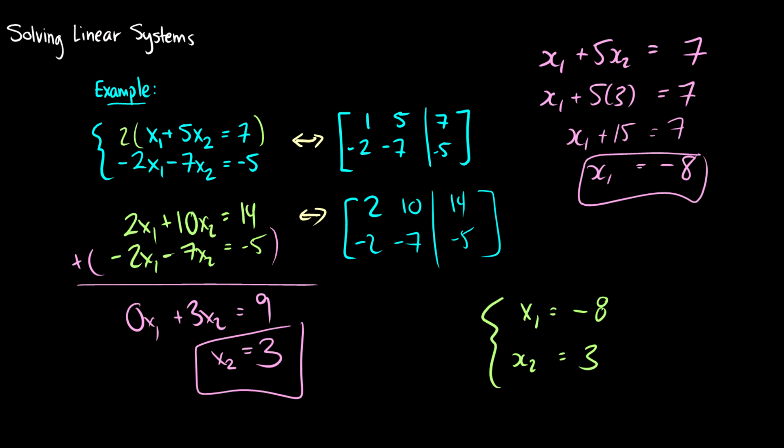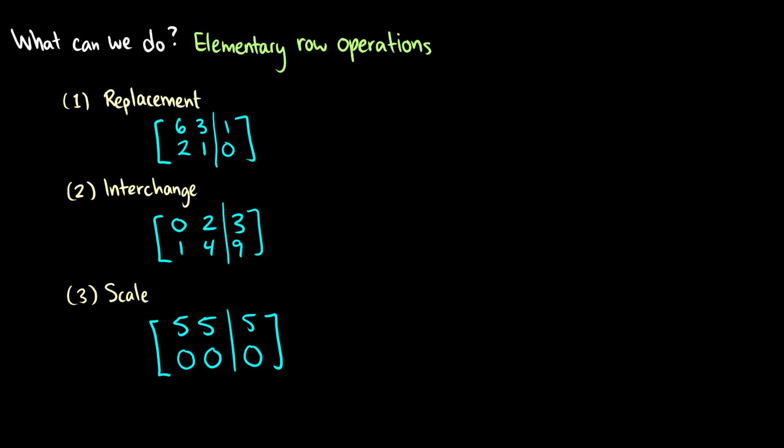Now that we have matrices, it doesn't make much sense to write out everything all the time. We have things called elementary row operations that correspond to what we do with all our variables in those long equations. There are three things we can do: we can replace rows, interchange rows, or scale rows.